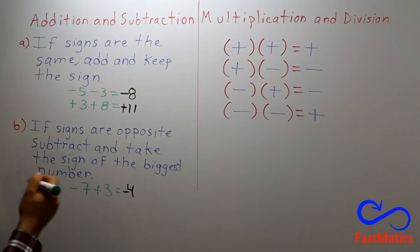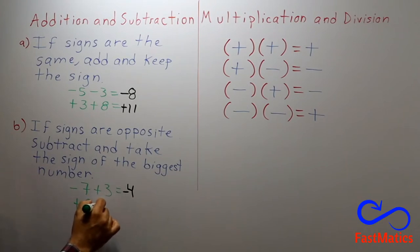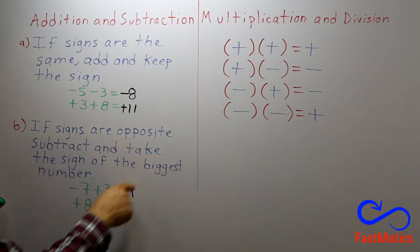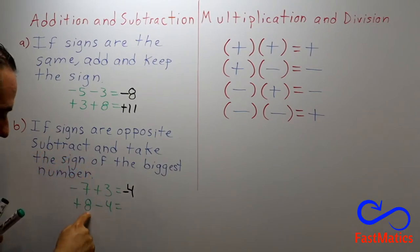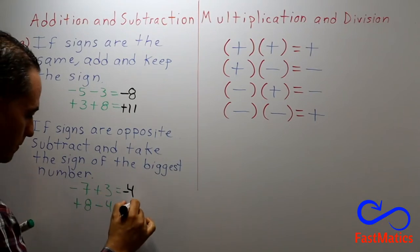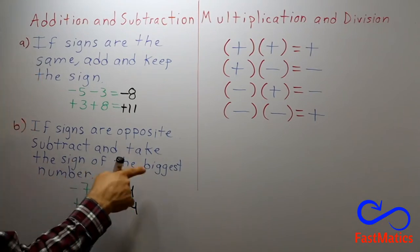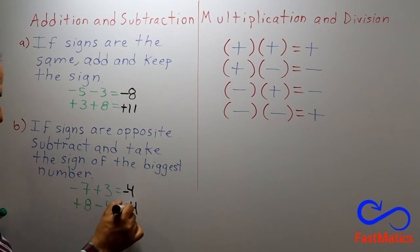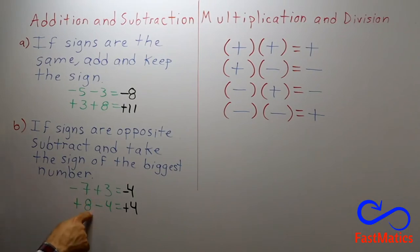Let's see another example. Plus eight minus four. Each number has a sign. The four has a negative sign. The eight has a positive sign. So, different signs, opposite signs. You subtract. Eight minus four is four. And after that, you take the sign of the biggest number. What's bigger? Eight or four? Eight. What is its sign? Positive. Okay. So, you have eight dollars, you pay four dollars, you have four dollars.